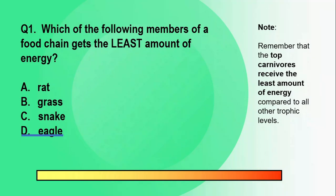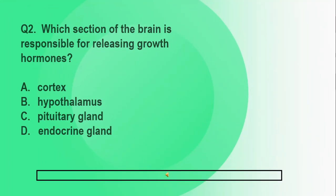Question number two, which section of the brain is responsible for releasing growth hormones? A. Cortex. B. Hypothalamus. C. Pituitary gland. D. Endocrine gland. Time's up. The correct answer is letter C, pituitary gland.